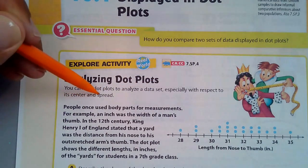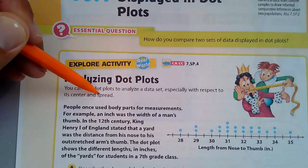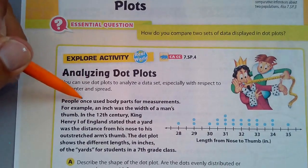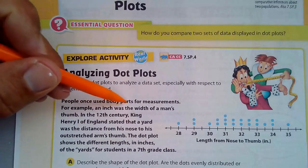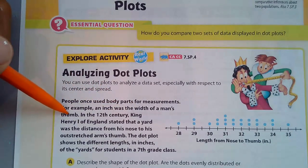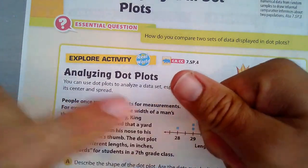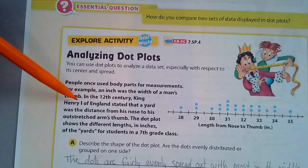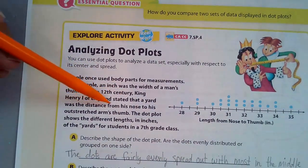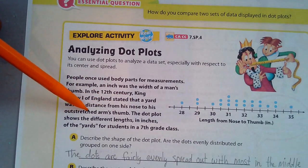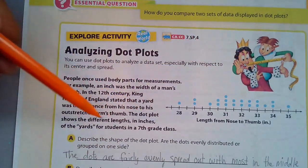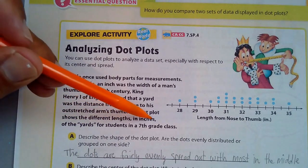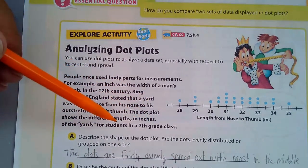You learned about center and spread in sixth grade, and I will remind you about some of that in this lesson. People once used body parts for measurements. For example, an inch was the width of a man's thumb, about an inch right there. And in the 12th century, King Henry I of England stated that a yard was the distance from his nose to his outstretched thumb. They have a little illustration right there. The dot plot shows the different lengths in inches of the yards for students in the seventh grade class, taken from their nose to the outstretched thumb.